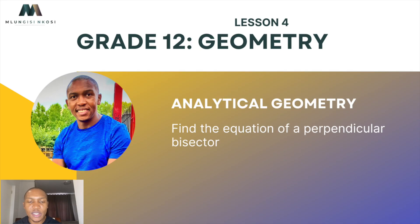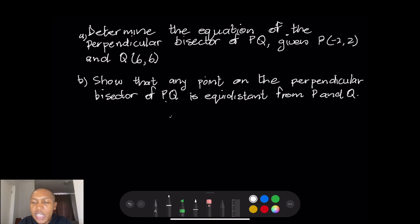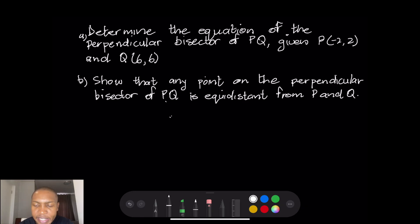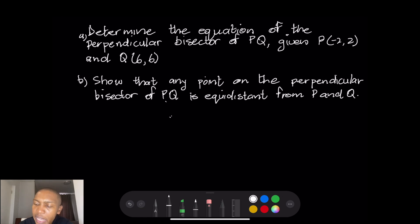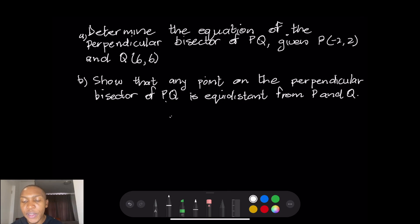Today I'm taking another lesson on analytical geometry, and this time we are discussing perpendicular bisectors. The question says: determine the equation of the perpendicular bisector of PQ, given that P is (-2, 2) and Q is (6, 6). The second part says: show that any point on the perpendicular bisector of PQ is equidistant from P and Q.